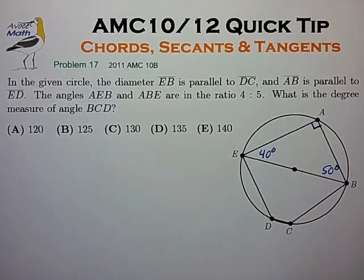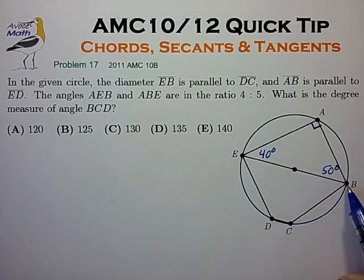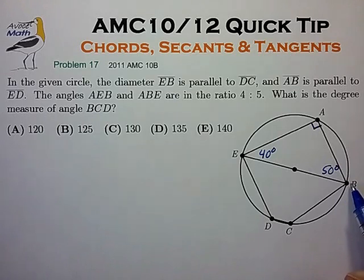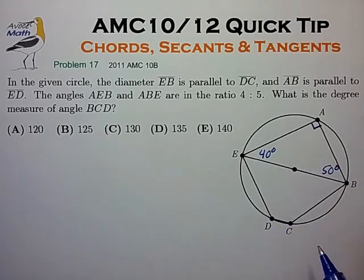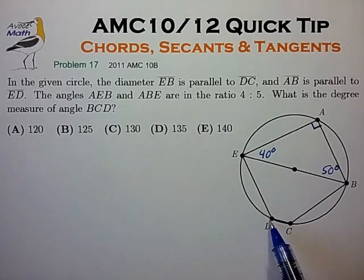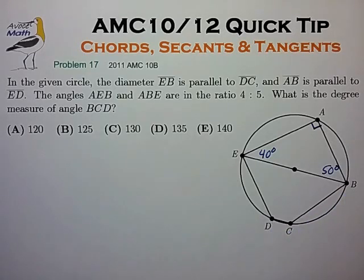At this point, it's not quite clear how to work out angle DCB. It looks like we could try to figure out the major arc angle DEAB, from which we can calculate angle BCD. Or perhaps it might be easier to figure out the arc angle DCB, subtract it from 360 degrees, and then use that to calculate angle DCB.